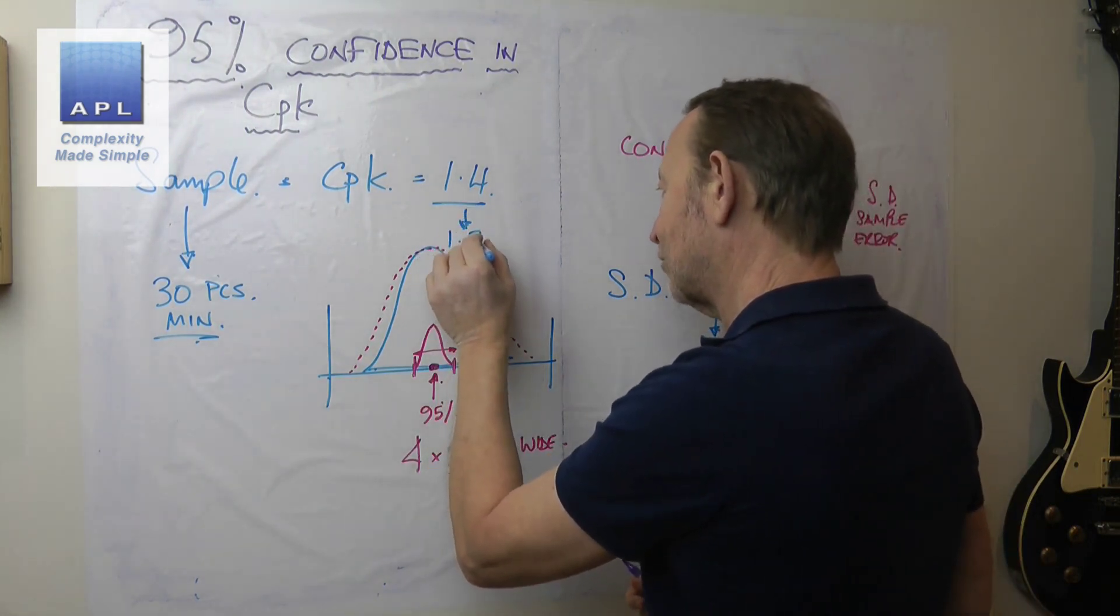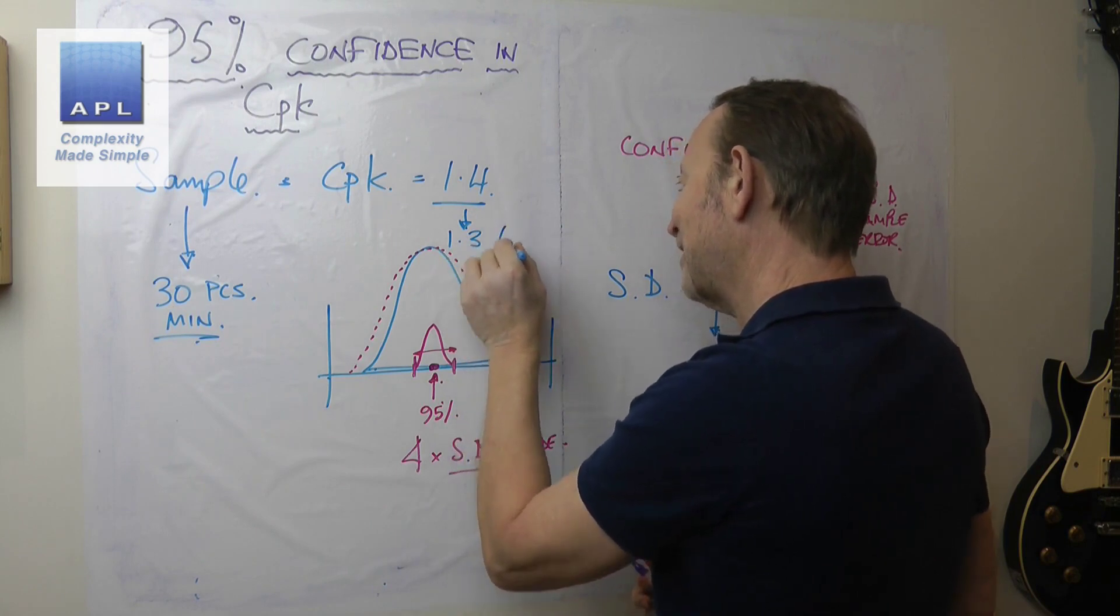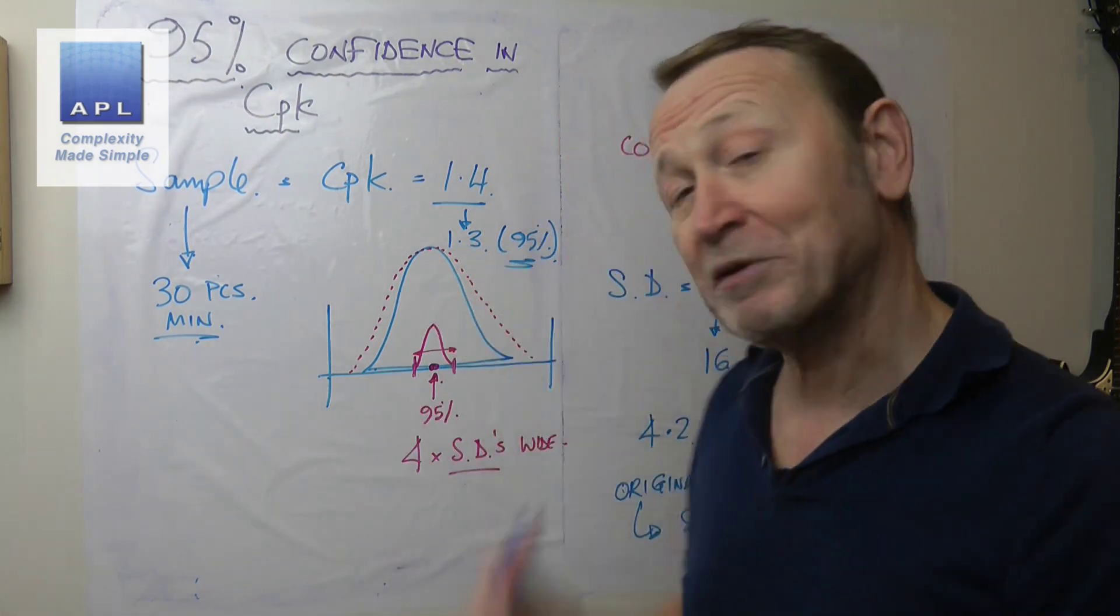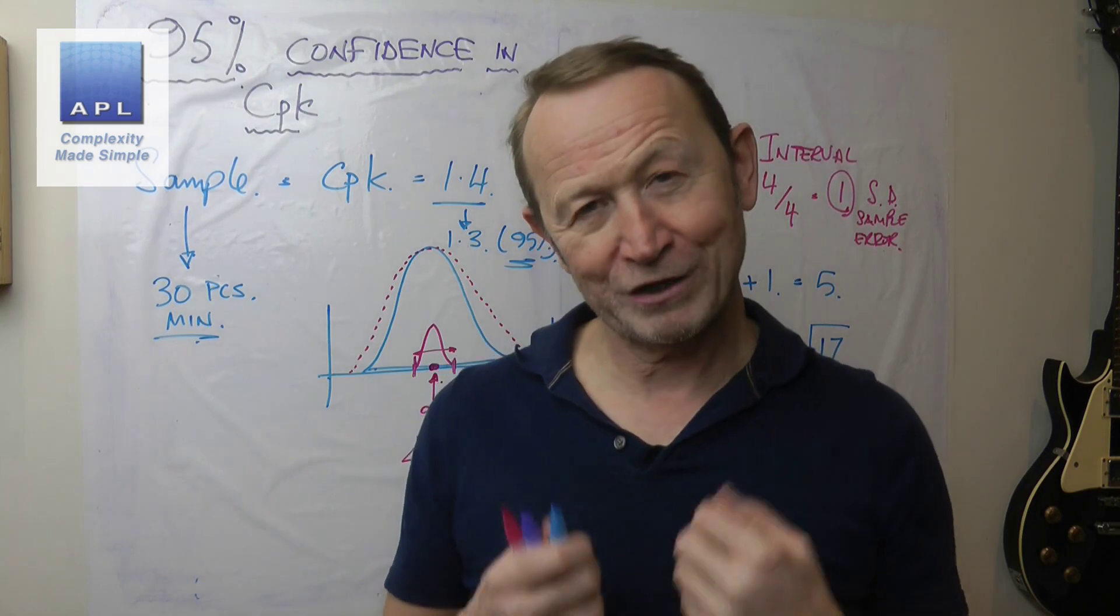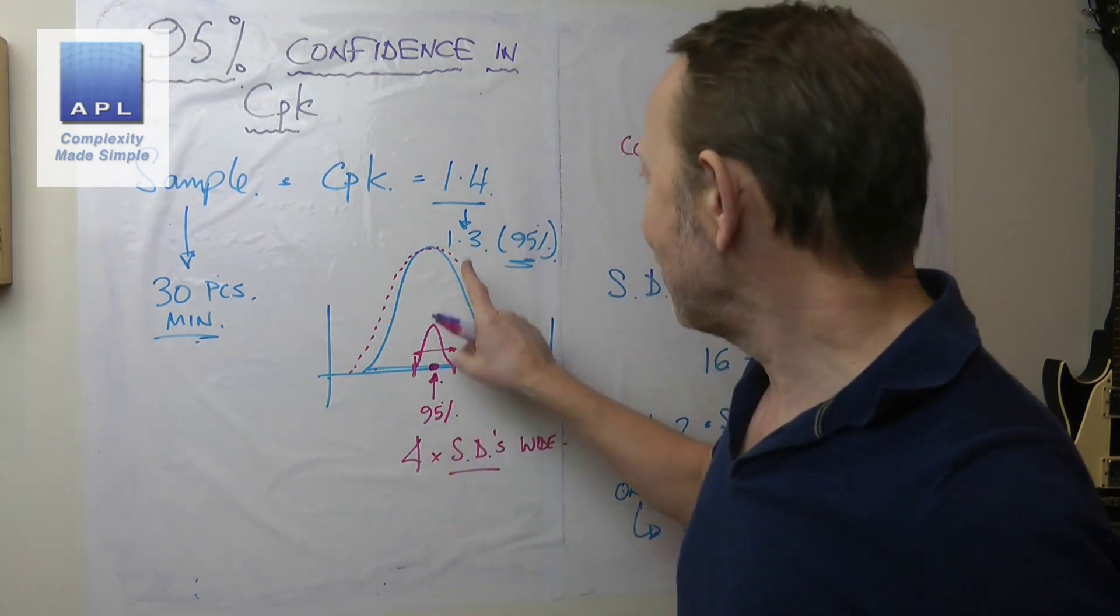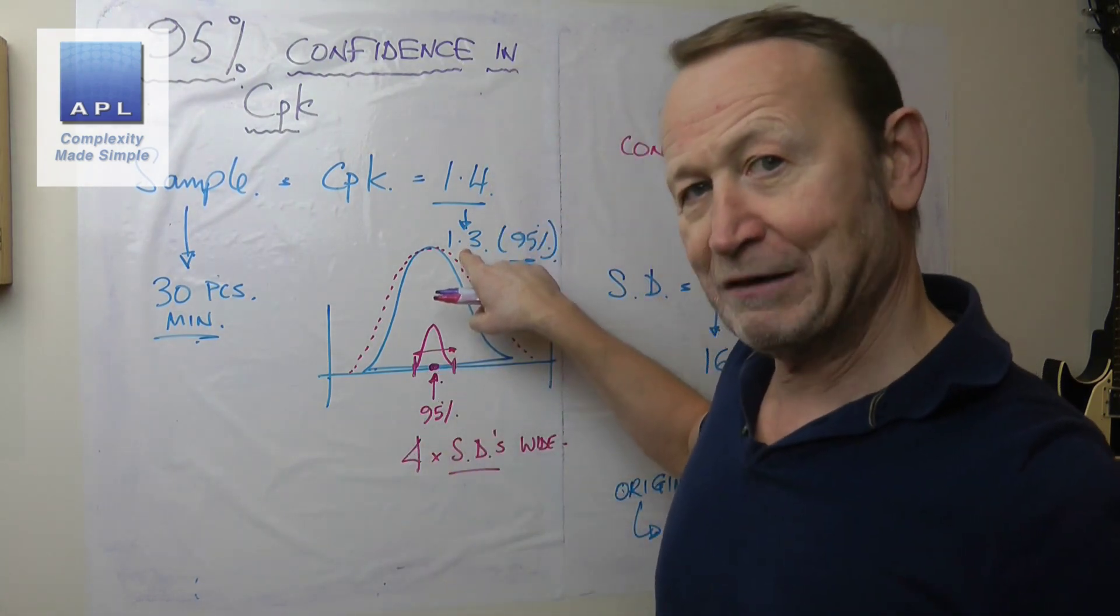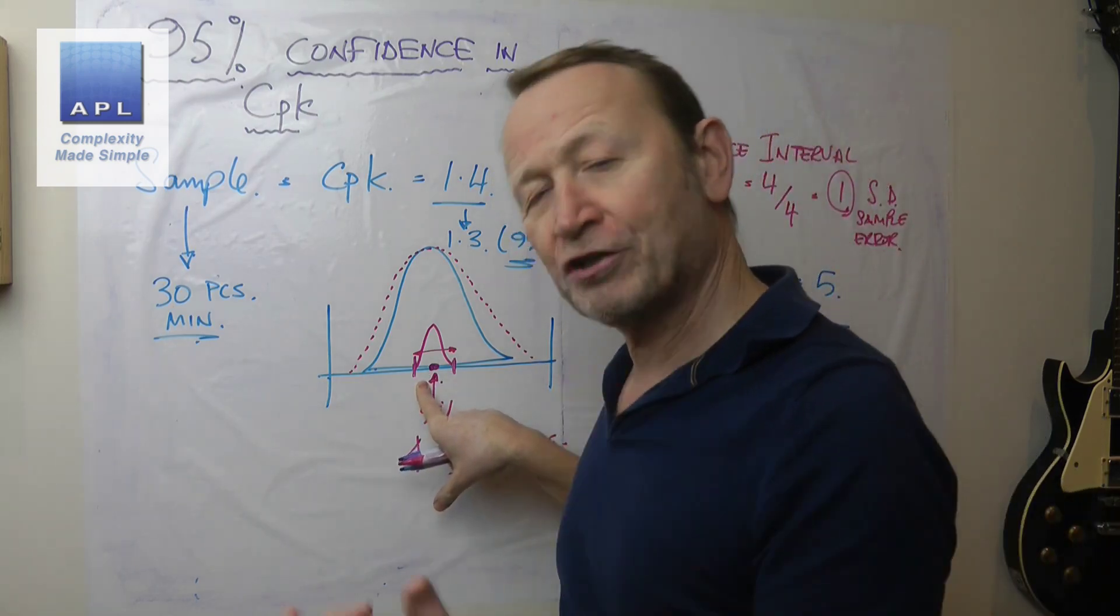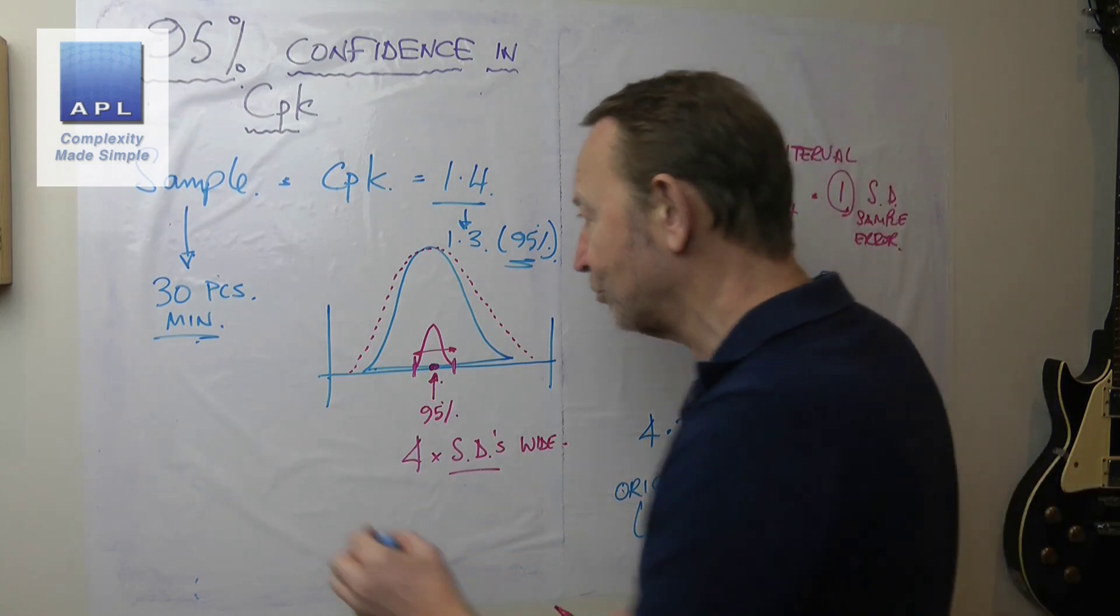When we degrade the CPK, let's say it goes down to 1.3, we now have 95% confidence that it's that as a minimum. Could be better, but it's 1.3 as a minimum. Now, if you don't like that number and you think this is a large enough component, of course, what could you do?